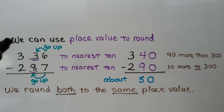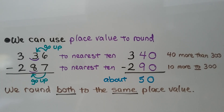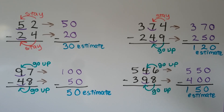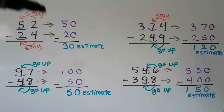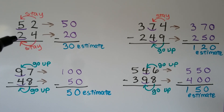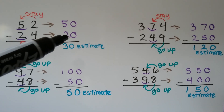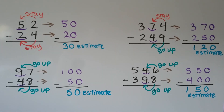We round both numbers to the same place value. If we were rounding to the hundreds place, we would round both numbers to the hundreds. You have to round both the minuend and the subtrahend to the same place. For 52 minus 24, rounding to the nearest tens place: the 2 tells the 5 to stay the same, and it becomes a 0, so that rounds to 50. The 4 tells the 2 to stay the same, so it rounds to 20. 50 minus 20 is 30 for our estimate.